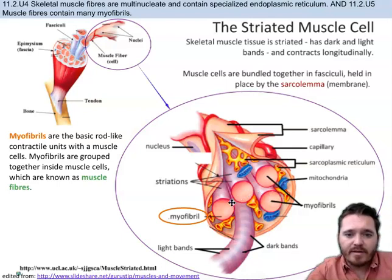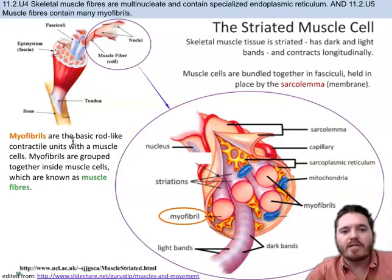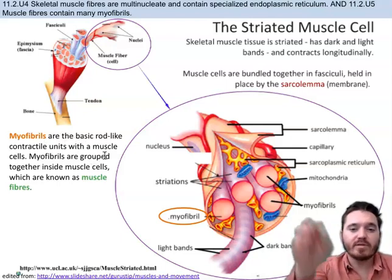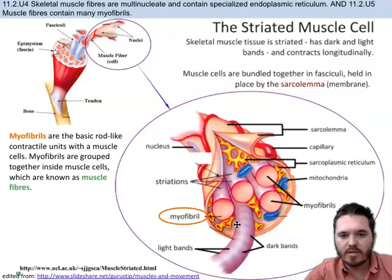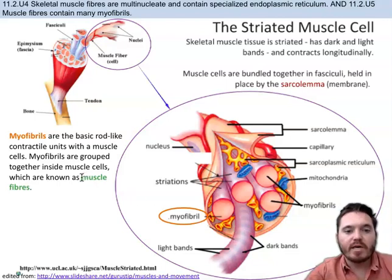You can also see nuclei in here. The myofibrils are the rod-shaped contractile units inside of the muscle cells. You can see five of them inside of this one muscle cell. These are the things that are actually contracting inside of a muscle cell. We can call the single muscle cell a muscle fiber.